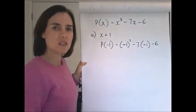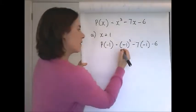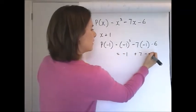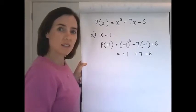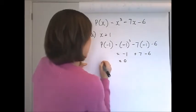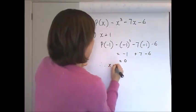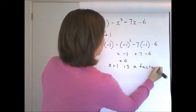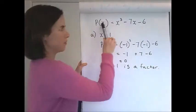If it doesn't, it's not a factor. So we get negative 1, we get plus 7, we get minus 6. That does equal 0. Therefore, x plus 1 is a factor of P of x.